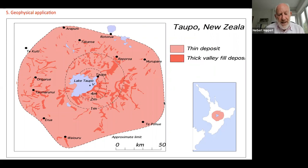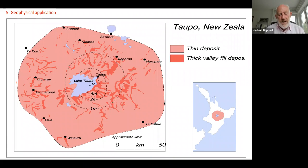We did an inverse problem — and inverse problems are much more difficult than direct problems — on the old eruption of Lake Taupo in New Zealand, quite a few thousand years ago. We know what the depth of the deposit is: thin deposits in the light area and rather thicker deposits elsewhere. We made an approximation that it's roughly a circle, and from that we could solve the inverse problem of what the eruption rate must have been.